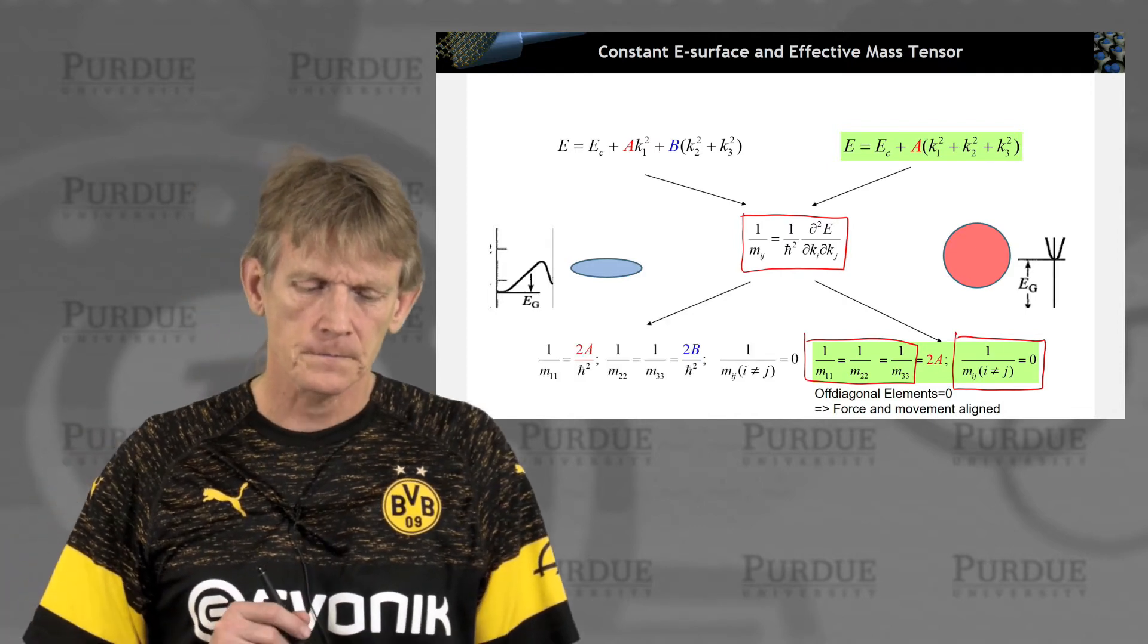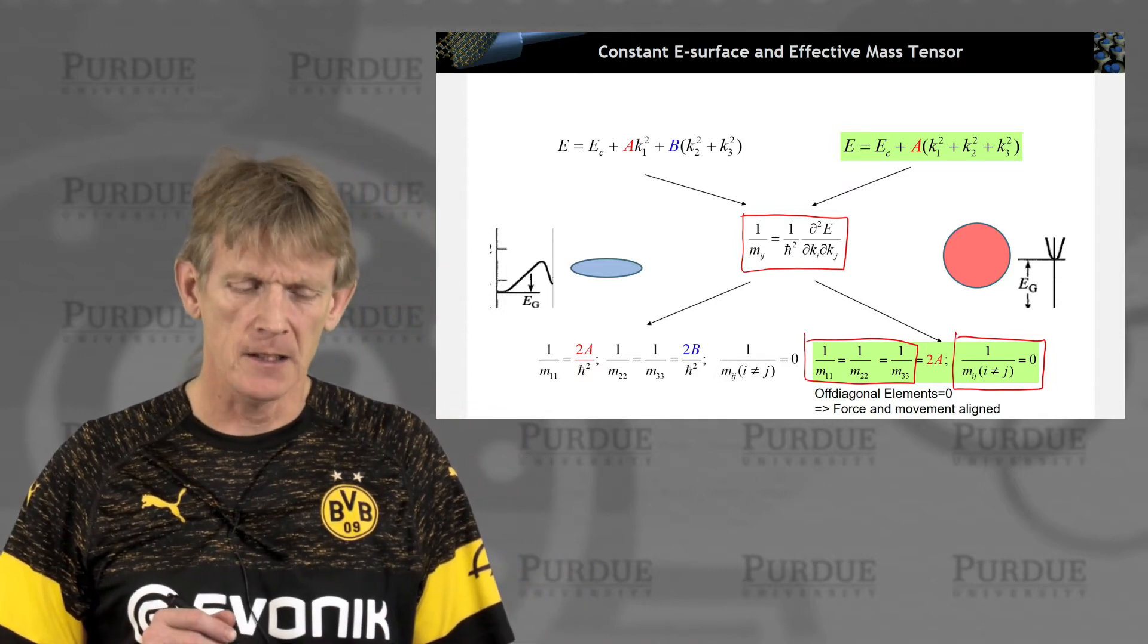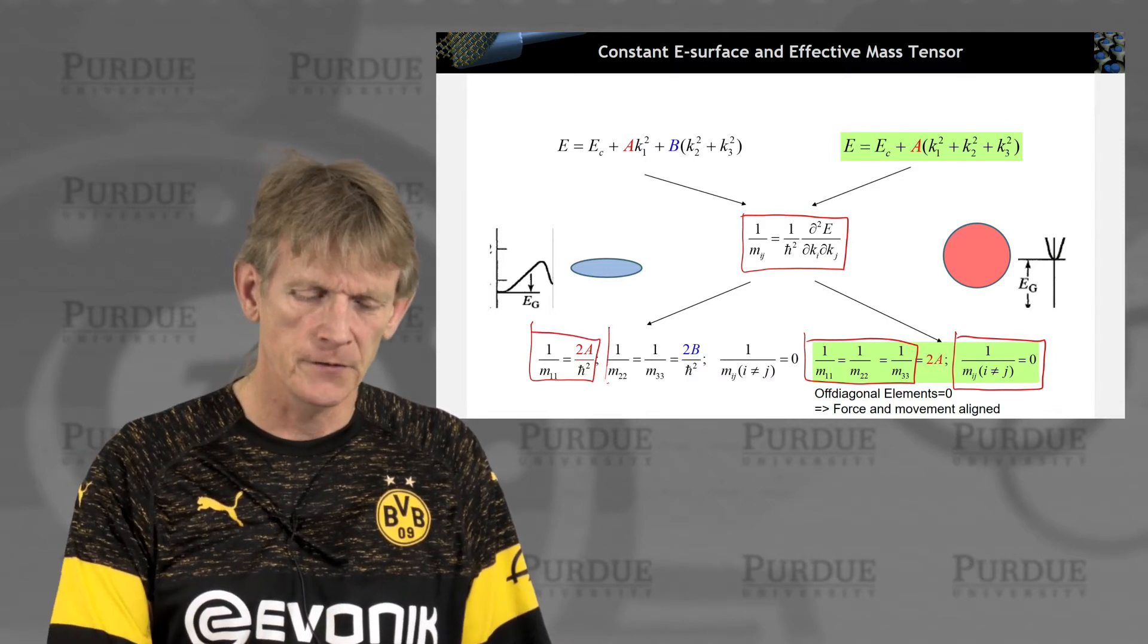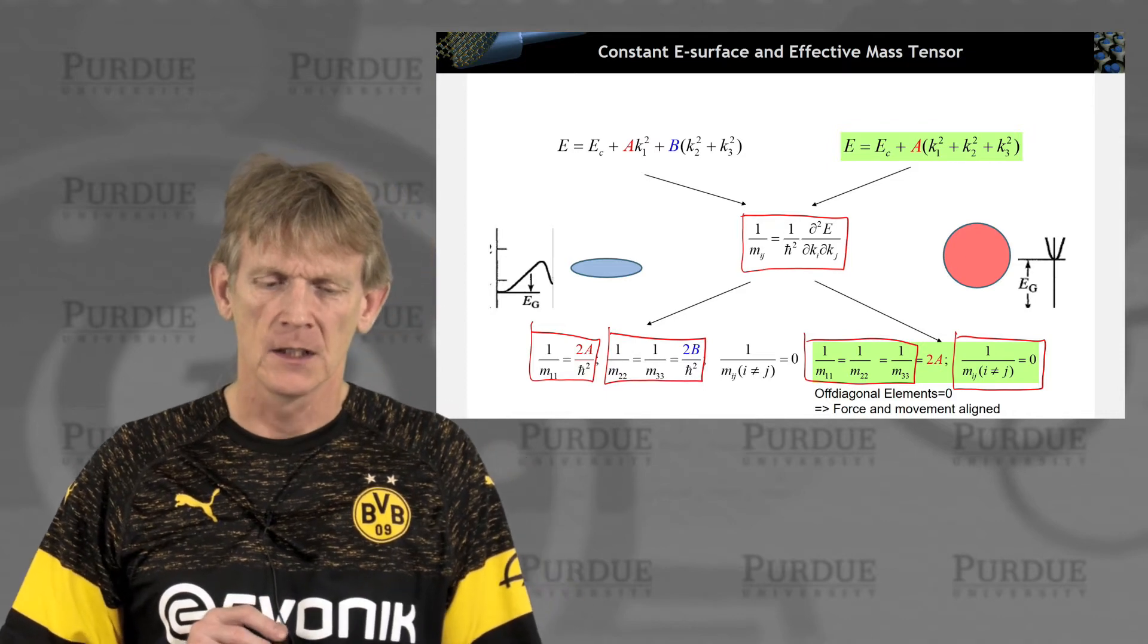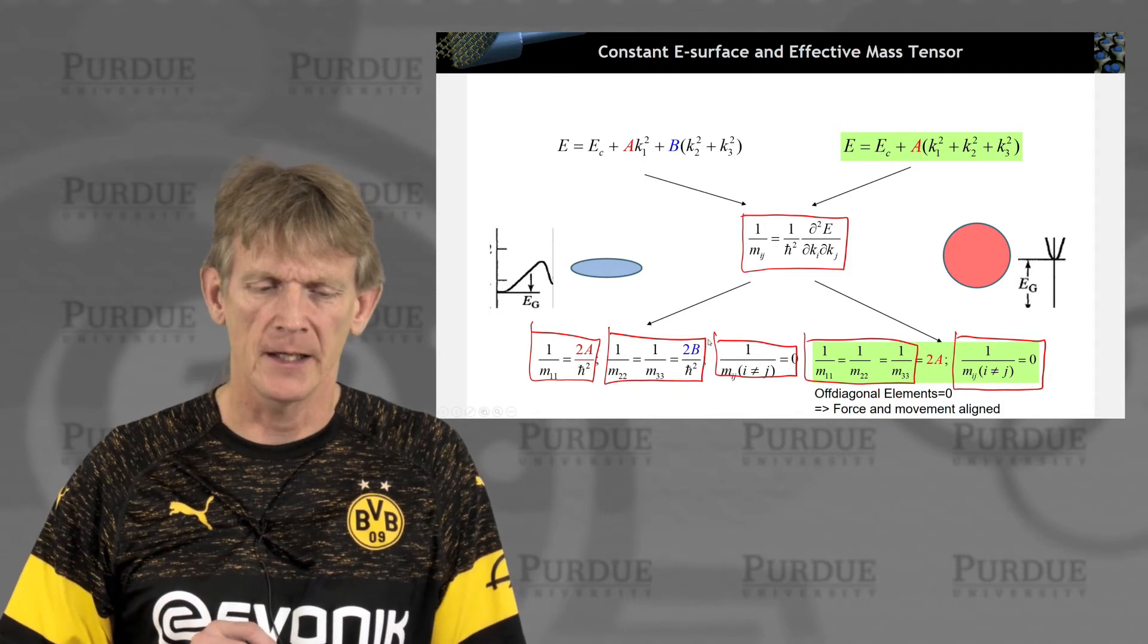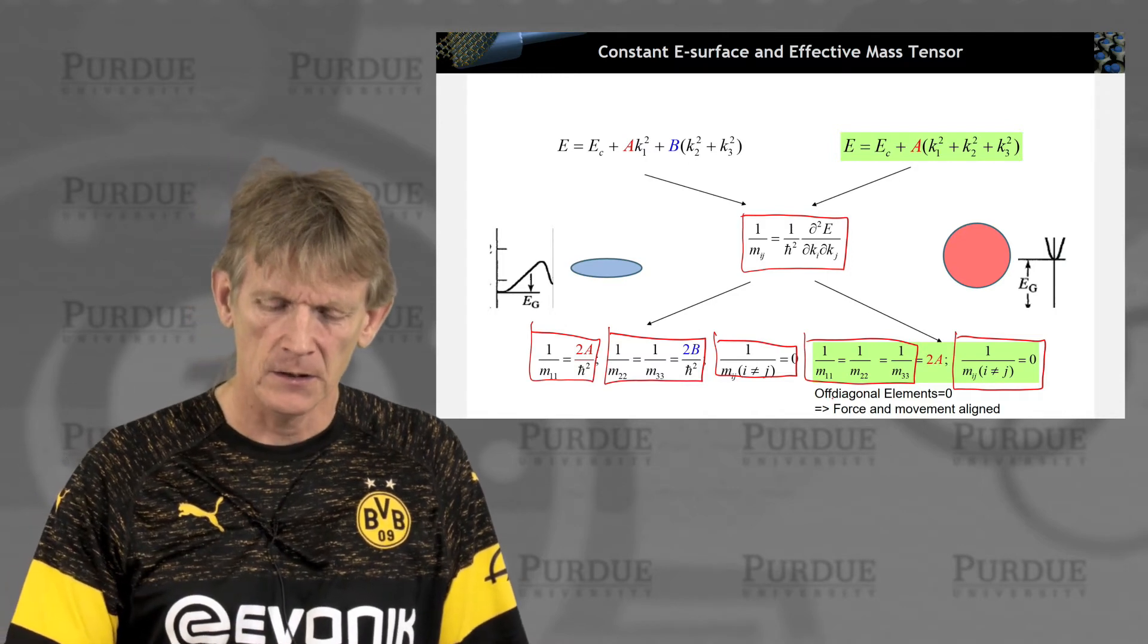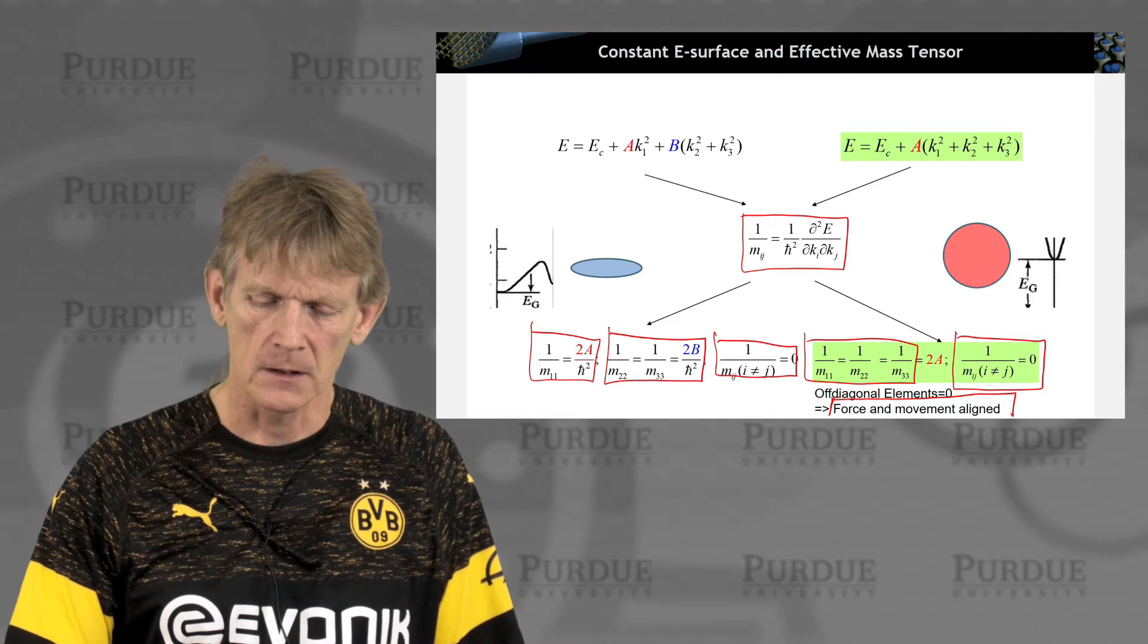Now, if we consider this ellipsoid for silicon and for germanium, we have the longitudinal component, and we have two masses that are the transverse components. And also for this ellipsoid, aligned in the principal axes, we have no crossover terms. So again, it's a diagonal tensor. That means that the force and the movement are aligned with each other.